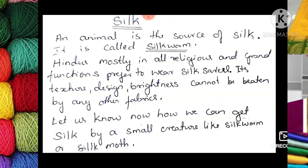Now let us see the next insect which gives us the fiber — that is silkworm. This insect is the animal source of silk, which is called silkworm. Hindus mostly in all religious and grand functions prefer to wear silk saris. Its texture, design, and brightness cannot be beaten by any other fabric — it is very precious and religious also. Let us know how we can get silk from a small creature like silkworm or silk moth.